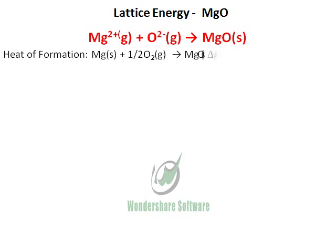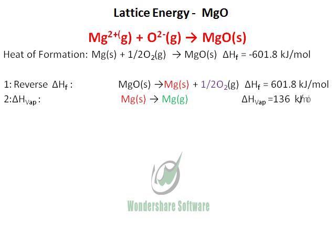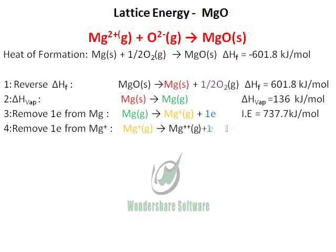In order to calculate the lattice energy, we need the heat of formation. We will reverse the heat of formation and therefore it has a positive sign. Then we need the heat of vaporization to convert solid magnesium to gas. Next, we remove electrons from magnesium: removing one electron gives the first ionization energy, and removing the second electron gives the second ionization energy.